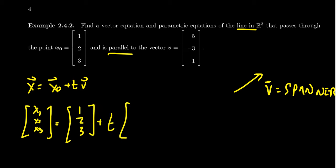T is some unspecified parameter here. And then the directional vector, the slope vector, our spanner, will be (5, -3, 1). So this is our vector equation.